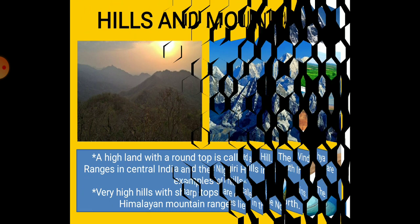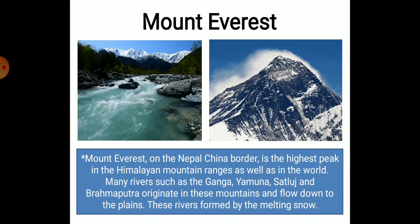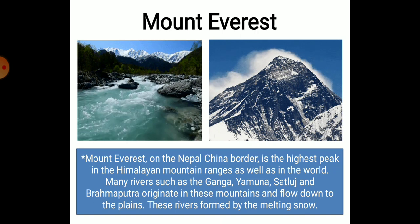Hills and Mountains: A high land with a round top is called a hill. The Vindhya Ranges in Central India and the Nilgiri Hills in South India are examples of hills. Very high hills with sharp tops — means peaks — are called mountains. The Himalayan mountain ranges lie in the north. There are many peaks in these mountains, and most of them remain covered with snow in the mountain ranges.